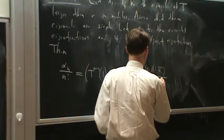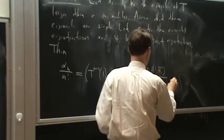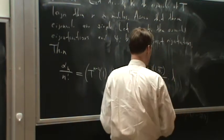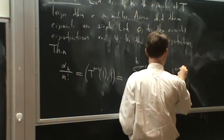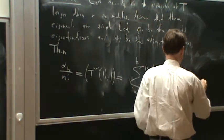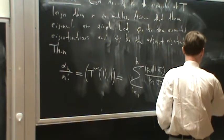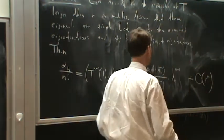Conjugate di, psi i here, times equal to 1 in the value. Lambda i to the power of n minus 2, plus an error term, R to the n.